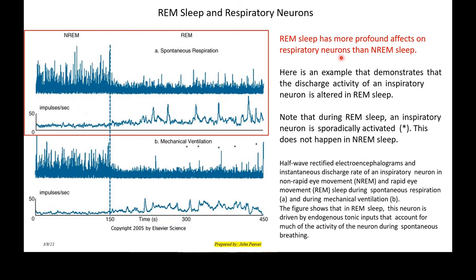REM sleep has profound effects on respiratory neurons, much more than non-REM sleep. They don't just stop quietly — they become erratic. In non-REM sleep the activity of an inspiratory neuron is present, but in REM sleep, yes, it is depressed but it breaks through occasionally, firing sporadically. That doesn't happen in non-REM sleep. So we know that sleep is affecting the respiratory neurons in the medulla.